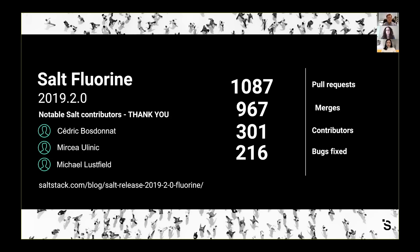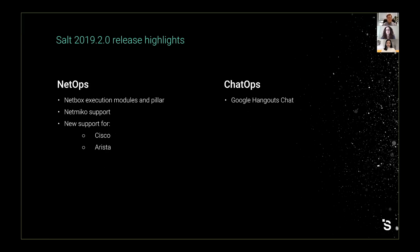I'd like Megan to talk about some of the exciting features for the fluorine release. There was a lot that happened in the fluorine release, particularly in terms of NetOps. There was a Netbox execution module that was added in the previous release, but there are now more features added. There is also a Netbox external pillar. There is also the Netmiko multi-vendor library, which is now integrated in Salt. You can use it via the Netmiko proxy module or directly via Salt.